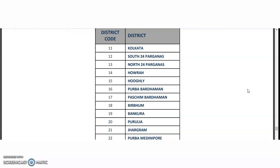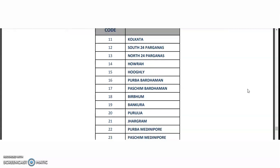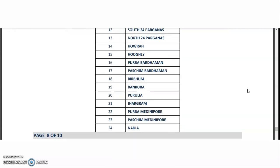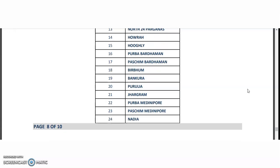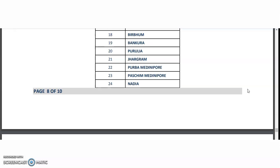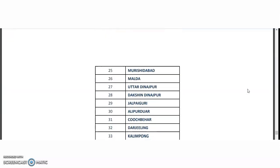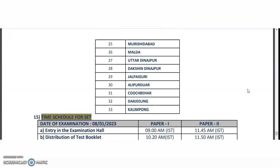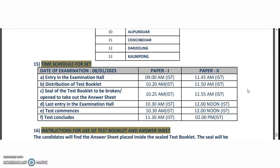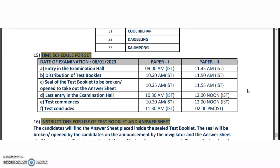Coming to the examination centers: Kolkata, South 24 Parganas, North 24 Parganas, Howrah, Hooghly, Purba Bardhaman, Paschim Bardhaman, and a few other locations — a total of 33 centers are mentioned here.